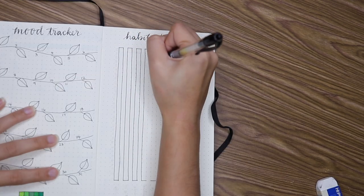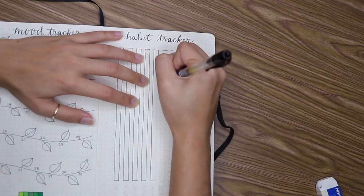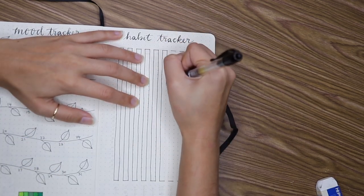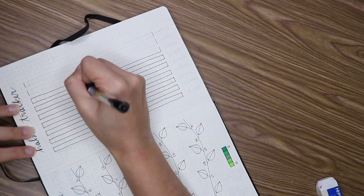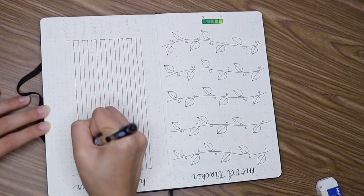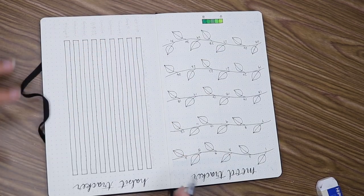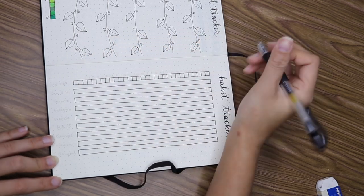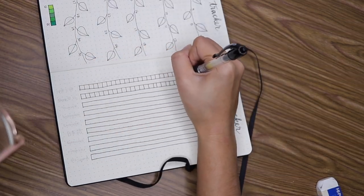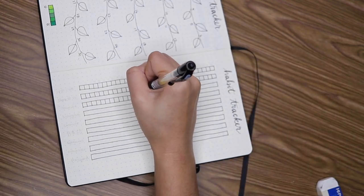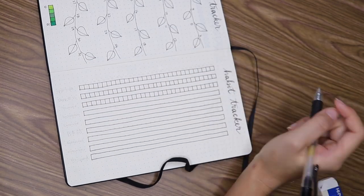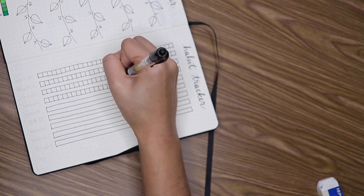I don't even know if that all made sense. Hopefully it did. But anyway, on to my habit tracker. For the past two months I wrote out each date eight times because I had eight habits that I was keeping track of. But I was so tired of all the hand cramps, plus it just took way too long to do it that way. So I went with a sideways layout so that I only had to write out each day once.